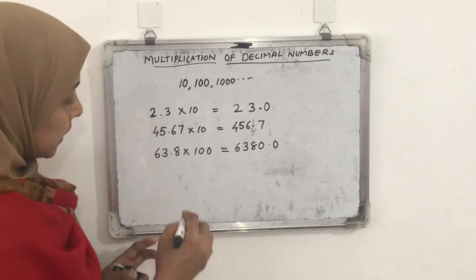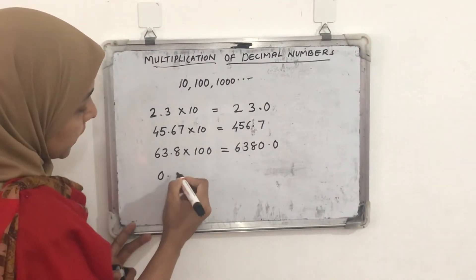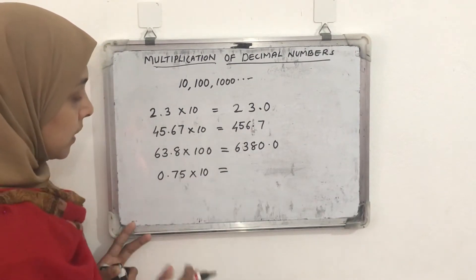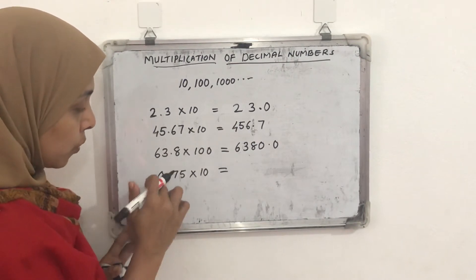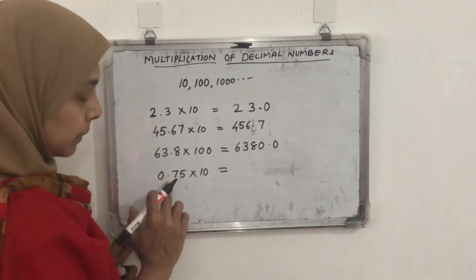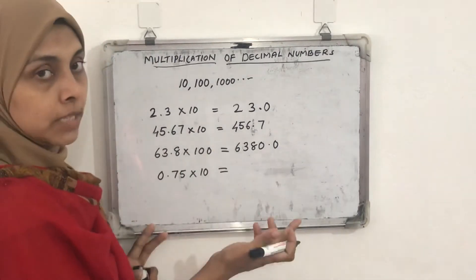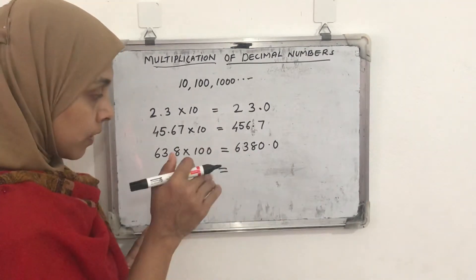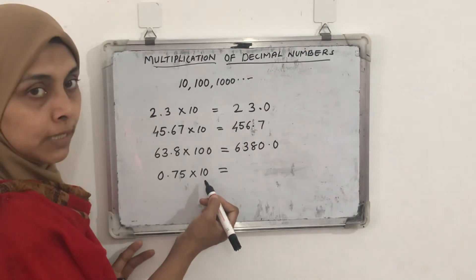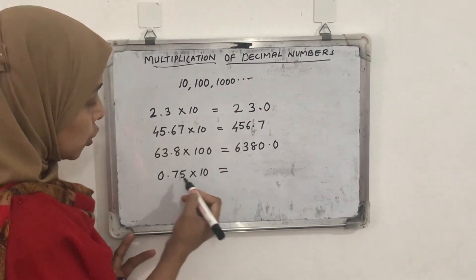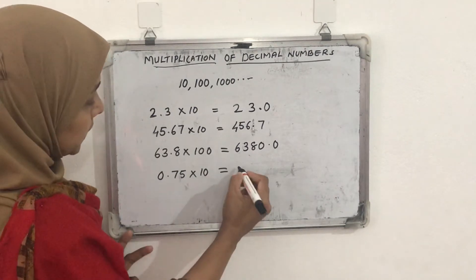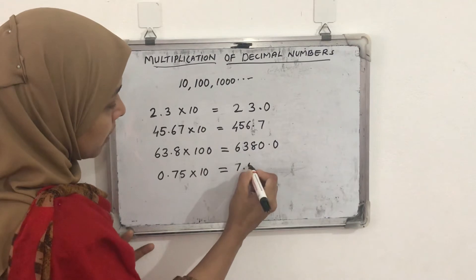Another example: 0.75 × 10. Here also we are shifting the decimal point to the right side. We decide how many places to shift according to the number of zeros in the multiplier. Here it is 10, so we shift the decimal point only one place to the right. The answer will be 7.5.